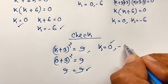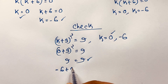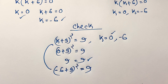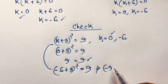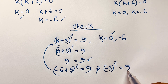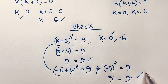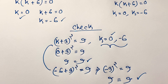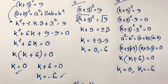Again taking k = −6: (−6 + 3)² = 9, so (−3)² = 9. Since the power is an even number it is always positive, giving 9 = 9. Left hand side and right hand side are both equal. So k = 0 and k = −6 is our final answer to this algebra problem.